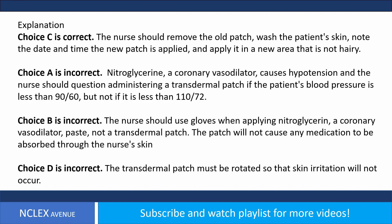Answer. Choice C is correct. The nurse should remove the old patch, wash the patient's skin, note the date and time the new patch is applied, and apply it in a new area that is not hairy. Choice A is incorrect. Nitroglycerin, a coronary vasodilator, causes hypotension and the nurse should question administering a transdermal patch if the patient's blood pressure is less than 90/60, but not if it is less than 110/70. Choice B is incorrect. The nurse should use gloves when applying nitroglycerin paste, not a transdermal patch; the patch will not cause any medication to be absorbed through the nurse's skin. Choice D is incorrect. The transdermal patch must be rotated so that skin irritation will not occur.